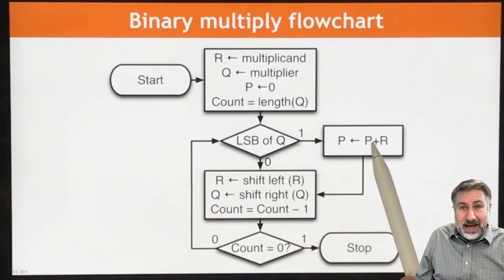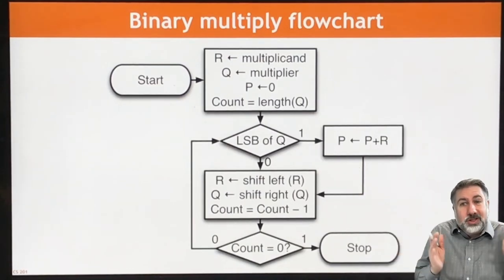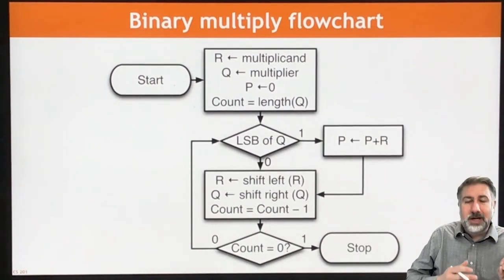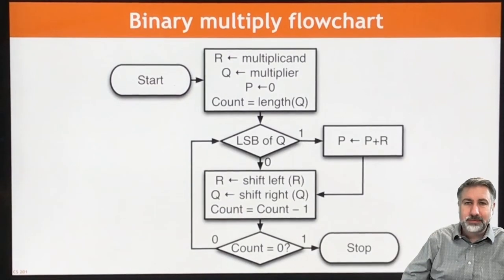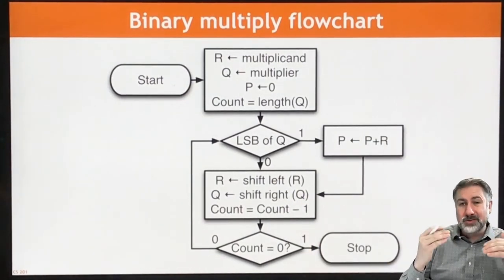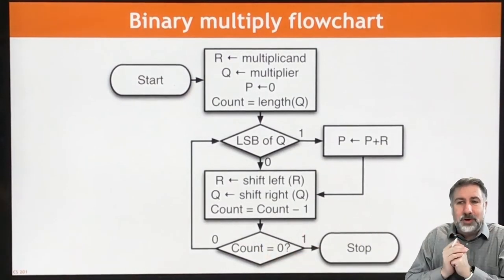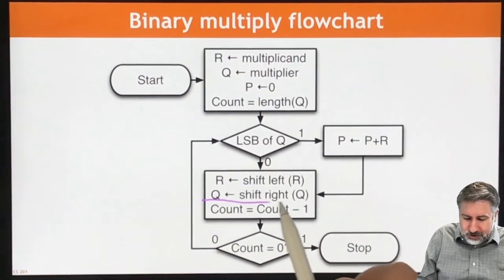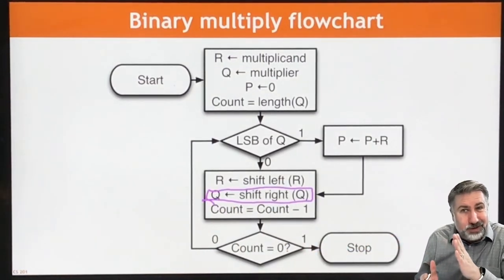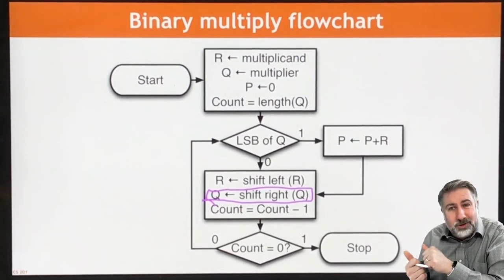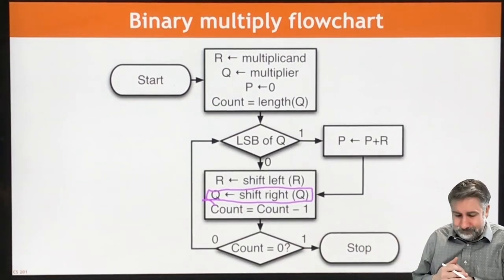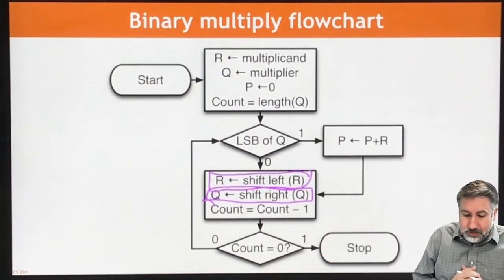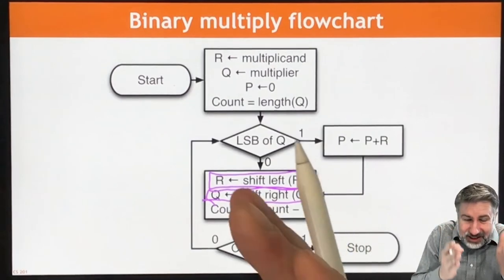If the LSB is a one, we add our multiplicand to our current value of the partial product. The partial product starts at zero, so if the multiplier has a bit of one there, we add that multiplicand to the partial product. If it's zero, we skip that addition. But either way, the next step is the same: after we've added or not added — multiplied by zero or one — we shift things around so that next time we come through, we're adding the number in the right place of the partial product and paying attention to the right bit of the multiplier.